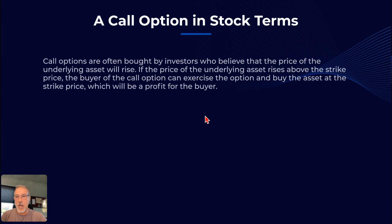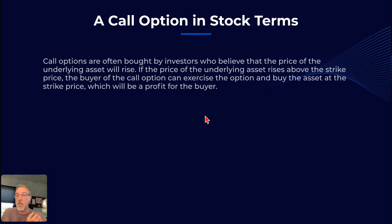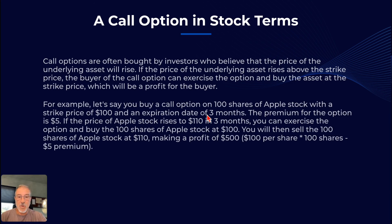In stock terms, call options are bought by investors who believe the price of the underlying asset is going to go up. The buyer can exercise that option and buy the asset at the strike price, which will be a profit. For example, if the house goes up to $550,000 or $600,000, spending the $10,000 in premium was worthwhile — I can exercise the right to buy it for $500,000 and sell it for $550,000. The same is true of a call option on stock.